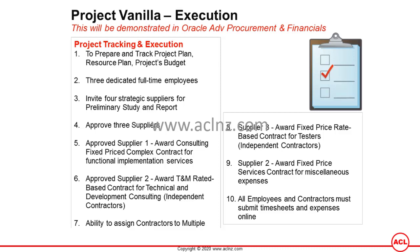They also wanted the ability to assign contractors to multiple projects. Since Vision Corporation is a large organization with multiple projects executing at the same time, if any other project came up while contractors were executing Project Vanilla, those contractors should be assignable to other projects as well. The third type of contract was to be assigned to a third supplier — a fixed price rate-based contract for independent contractors, specifically testers. There is also a time and material contract on an ongoing basis.